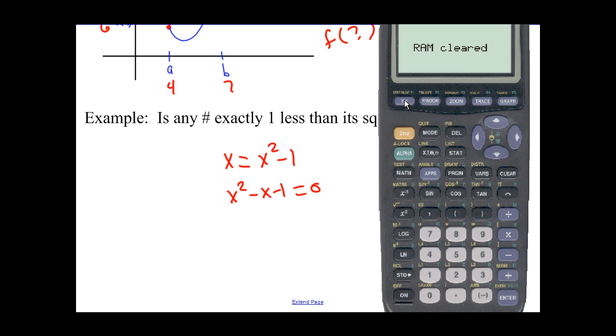All right, we have our graphing calculator. We're going to go to y equals. We have x² - x - 1. And if we graph that, we see that there is a value for 0 right there.